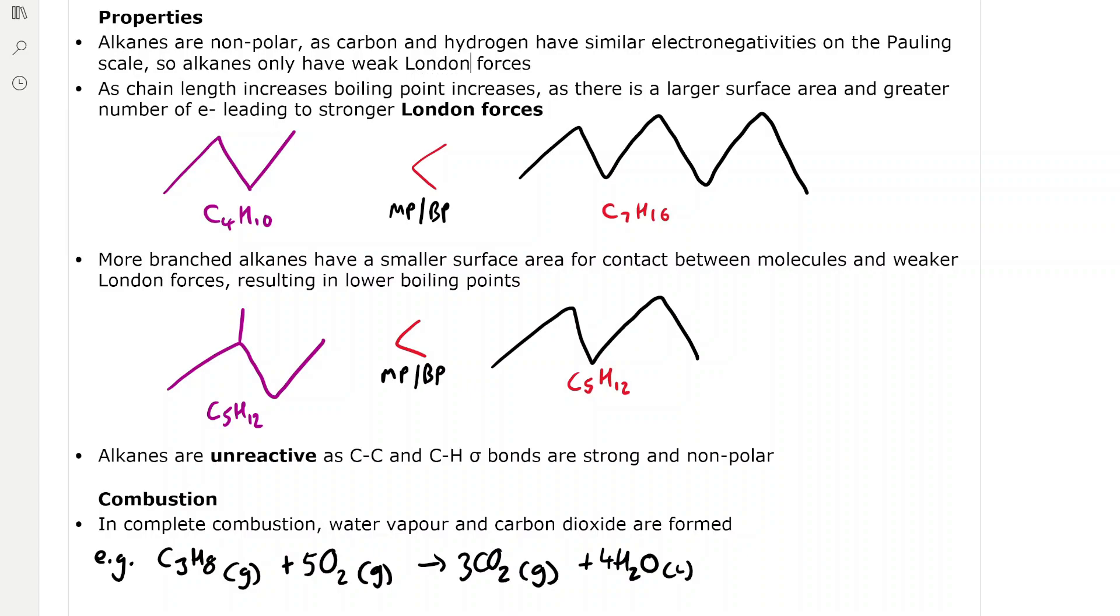Alkanes are non-polar because carbon and hydrogen have similar electronegativities on the Pauling scale, so alkanes only have weak London forces which require little energy to overcome.